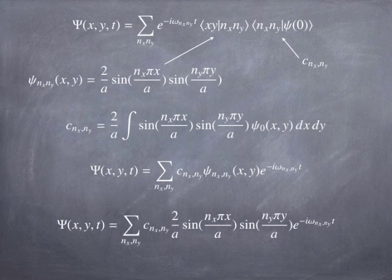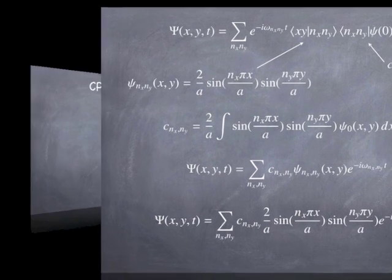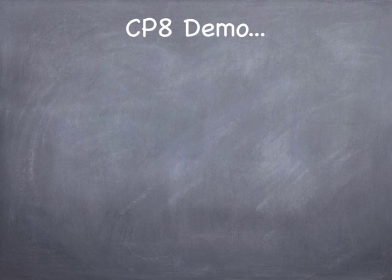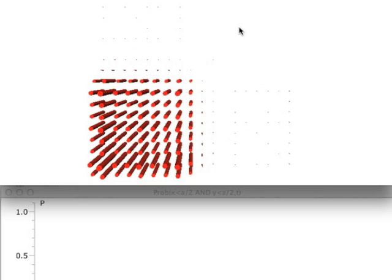But now you're summing over not just a one-dimensional set of basis vectors, now you're summing over a two-dimensional set of energy eigenstate wave functions. But it's basically the same idea. And if you plug all that stuff in there, this is what you wind up with. It looks pretty terrible, but it's really not that bad. So let's look at Computing Project 8. We'll do a little demo associated with that and see how it turns. Okay, so here we are looking at Computing Project 8.